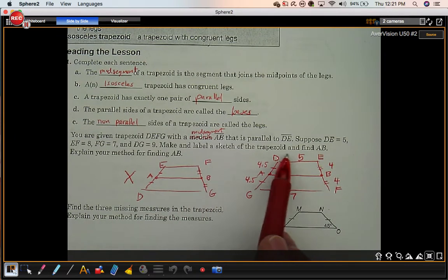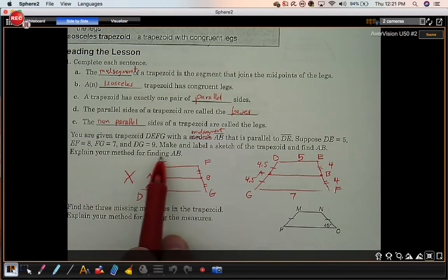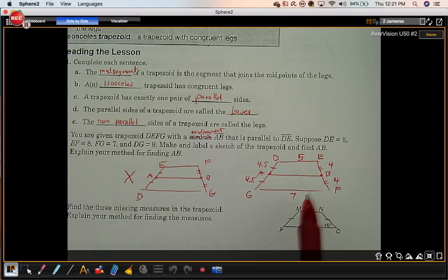Make and label a sketch of the trapezoid. Find the distance from A to B. Explain your method for finding the distance from A to B. Well, A to B is just going to be 6. Remember, it's just an average of the two base lengths, 5 and 7.